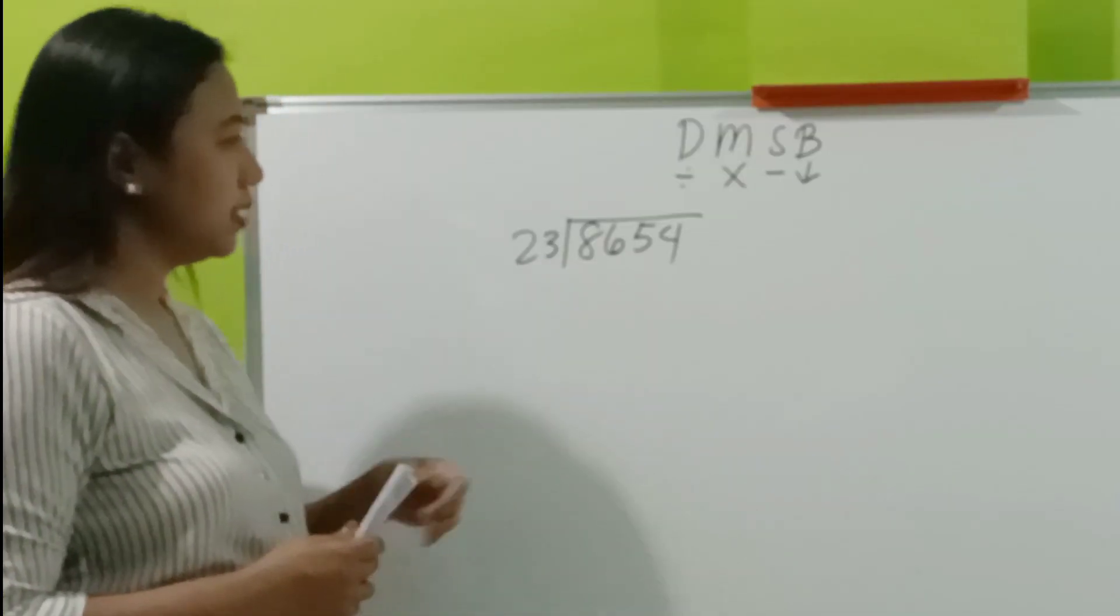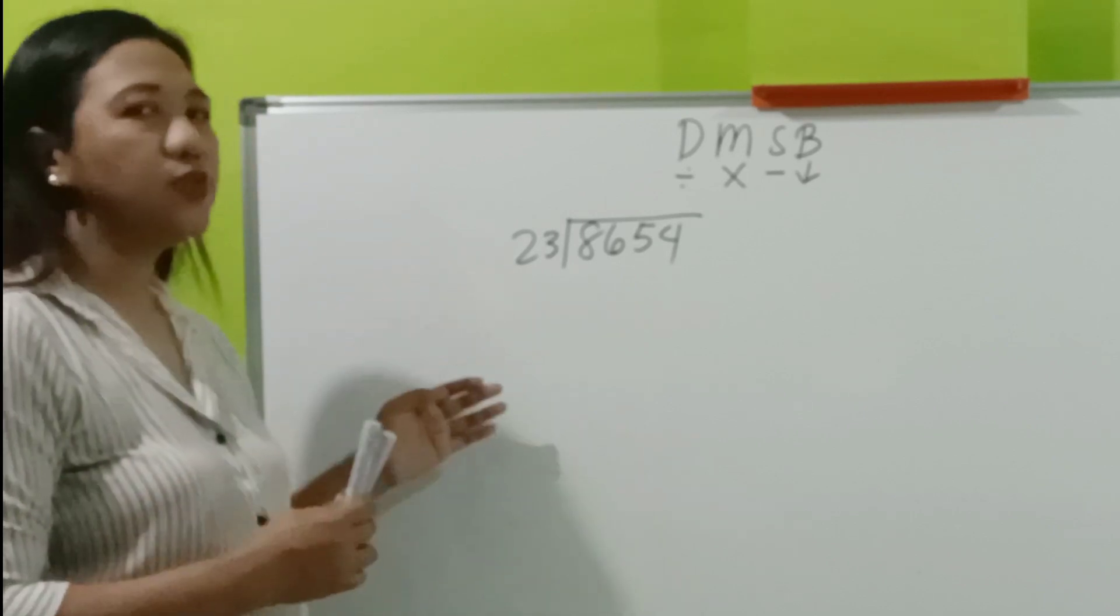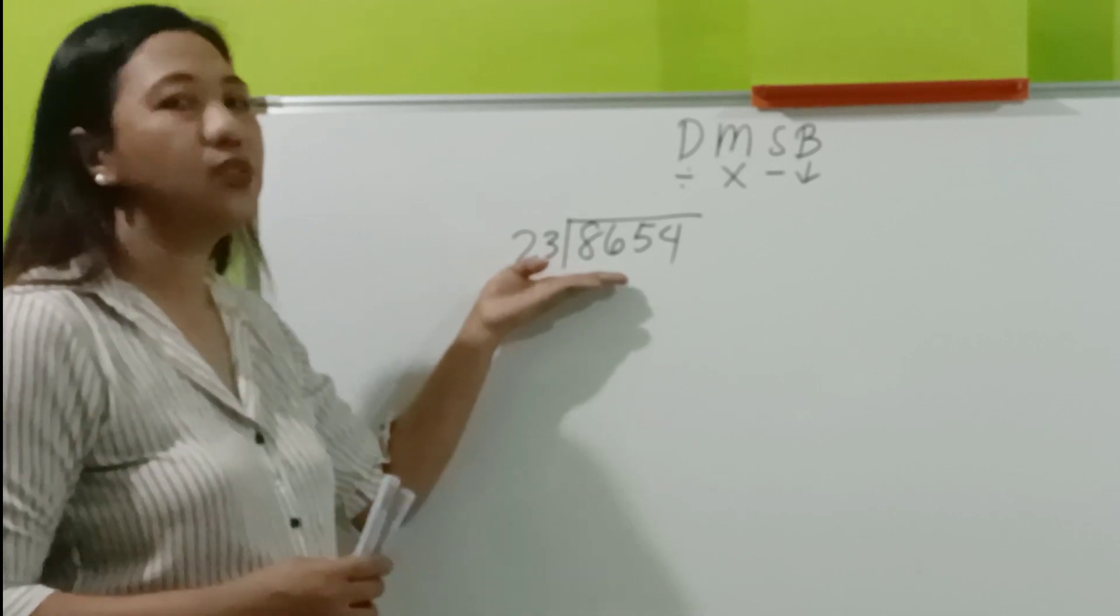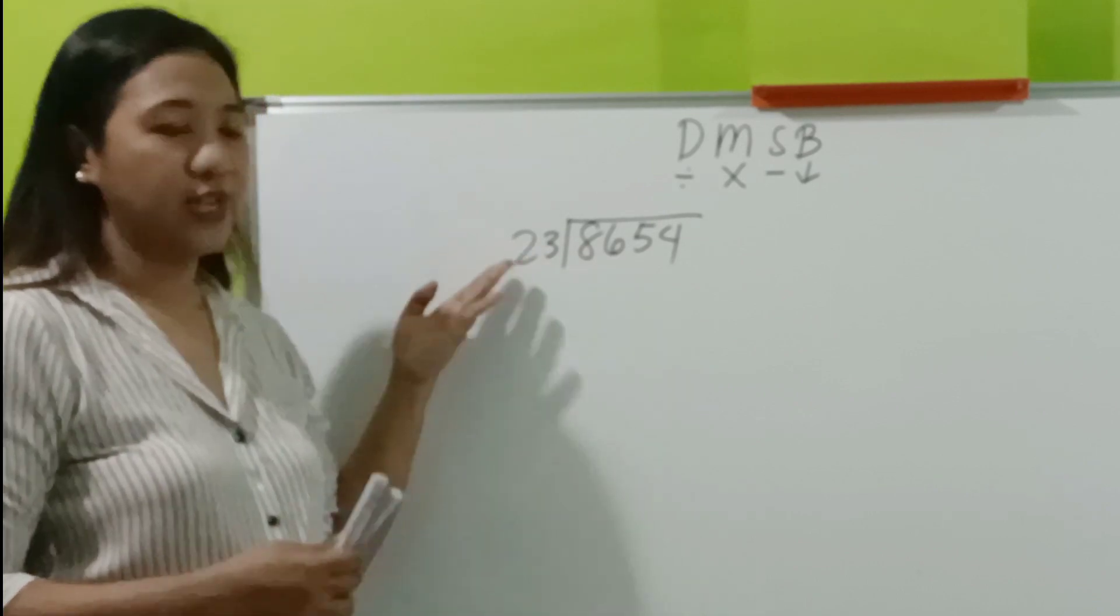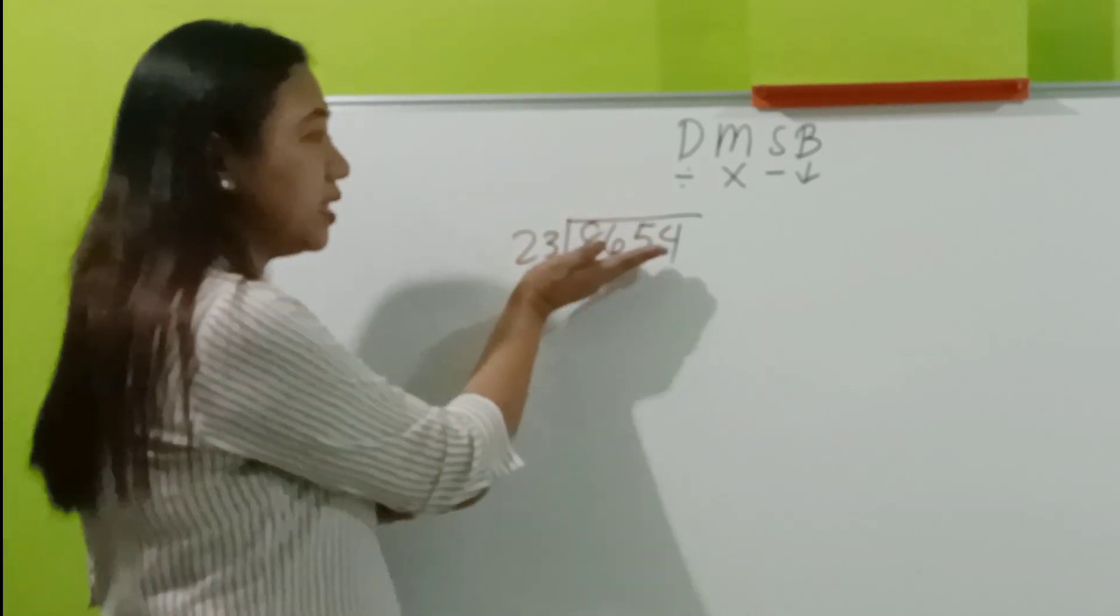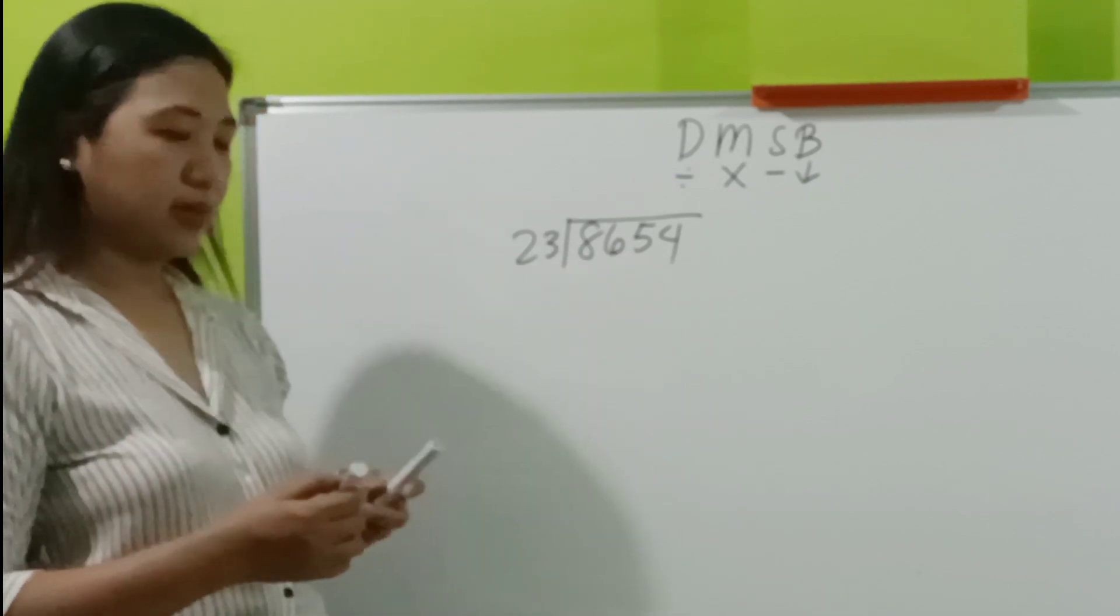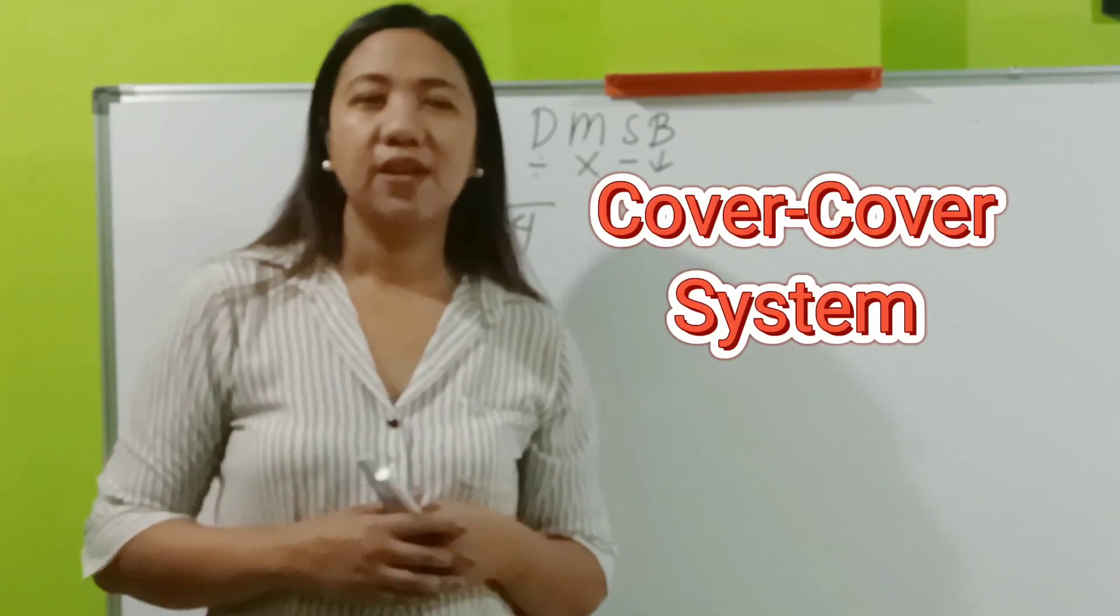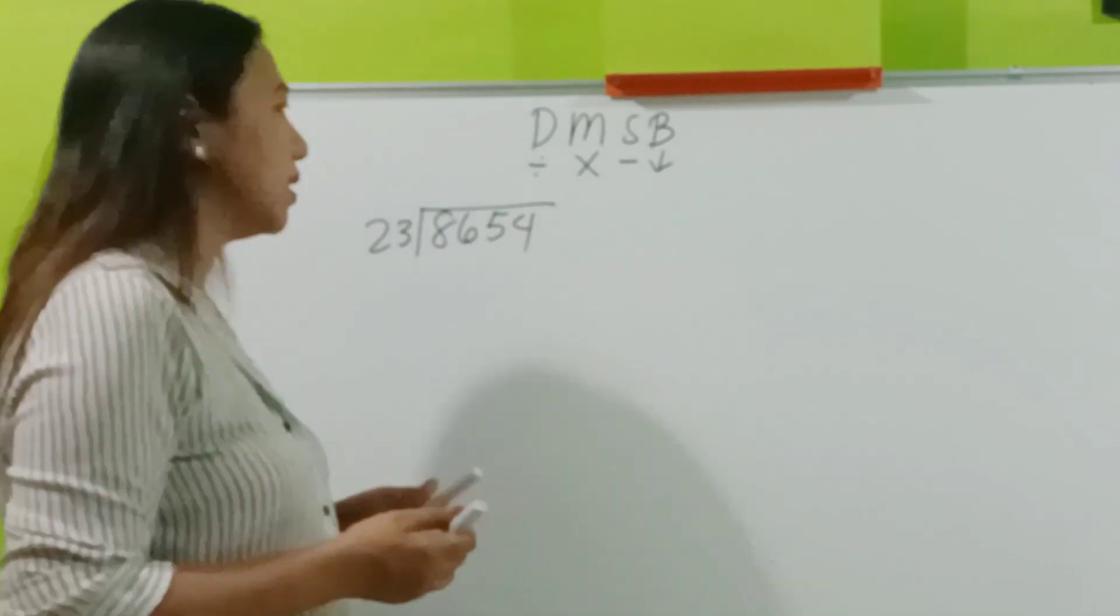So, let's have this one by a two-digit divisor. Usually, in dividing numbers by two-digit divisor, we start also with the first two digits from the left. As long as this one is bigger than the divisor. Otherwise, we take the three digits. But because 86 is larger than 23, let's take 86. The first method that I'm going to teach you is called Cover-Cover System. This is very applicable to those who are very good in estimating. So, how is it done?